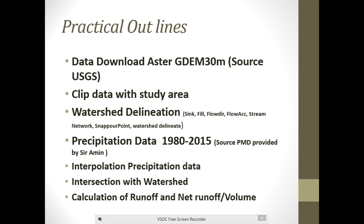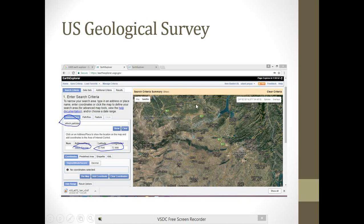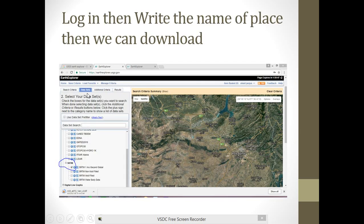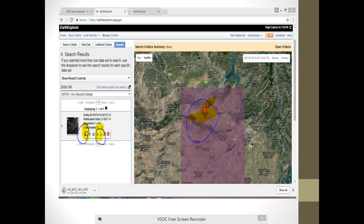For watershed modeling, first of all we have to know what data we need. We need the ASTER GDEM at 30-meter resolution, sourced from the USGS website. In the next two or three slides you can see how to download the data, then we will clip the data, look at fill and flow accumulation, and after all that we will delineate the watershed, followed by interpolation of precipitation data, intersection with the watershed, and calculation of runoff.